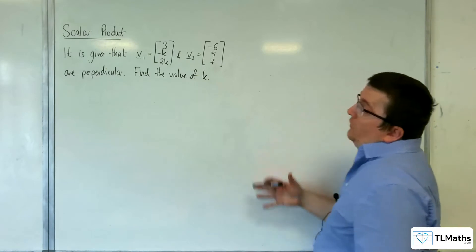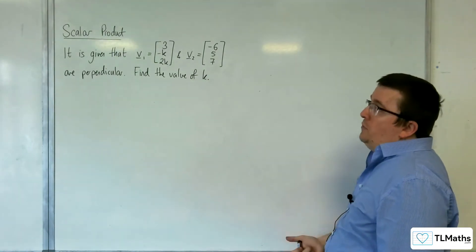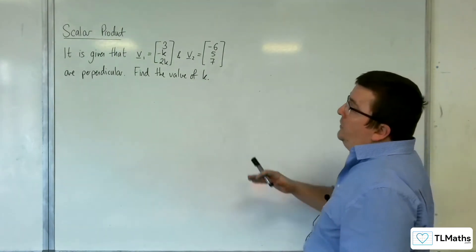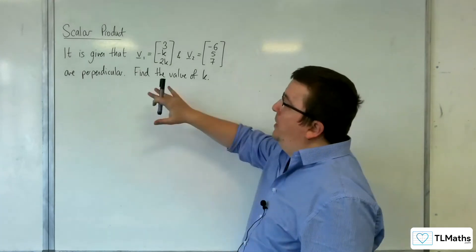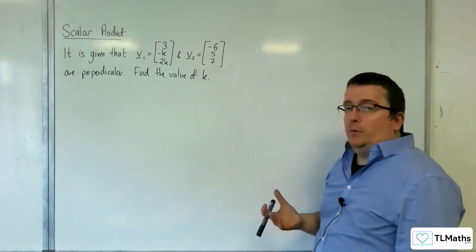In this video, it is given that v1 equals 3, minus k, 2k, and v2 equals minus 6, 5, 7, and they are perpendicular. Find the value of k.